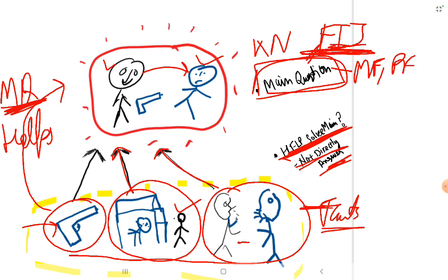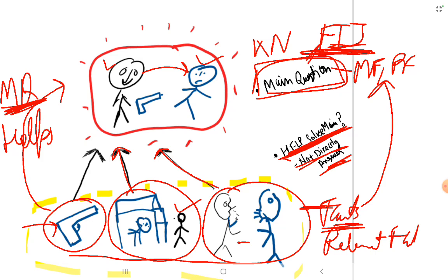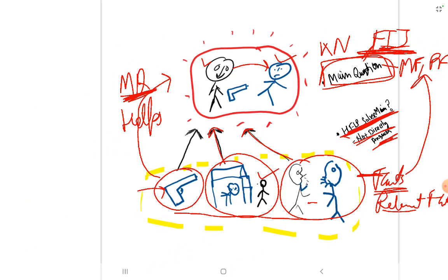All the facts that help to solve the main question — the fact in issue — are known as 'relevant facts.' They help solve the main question. These relevant facts help the court to understand the case, understand the main question, and reach a decision.